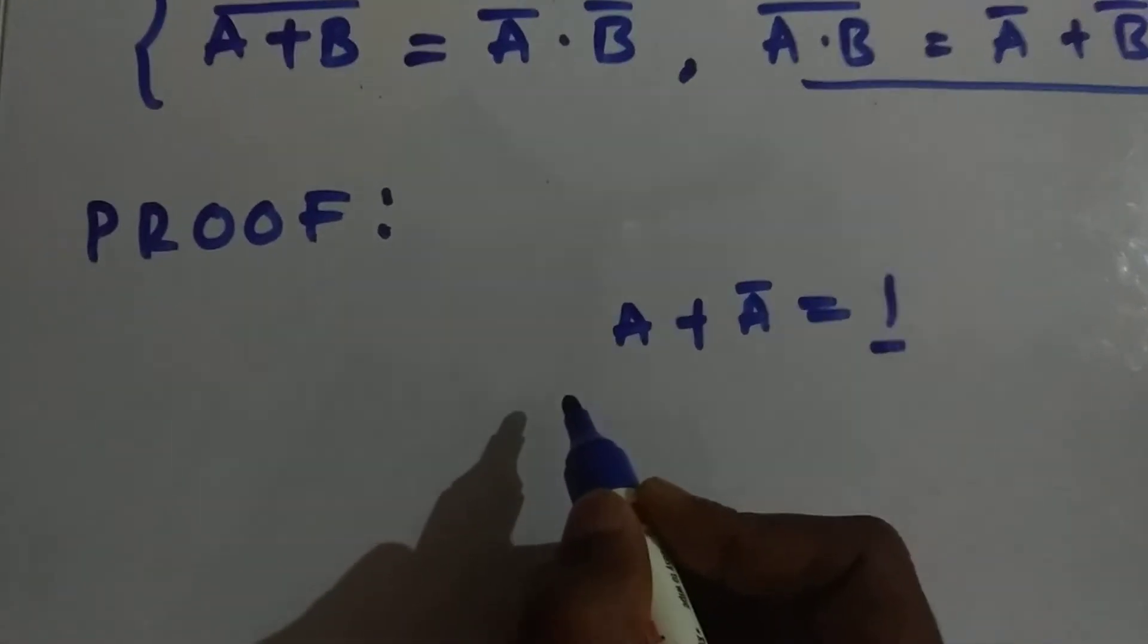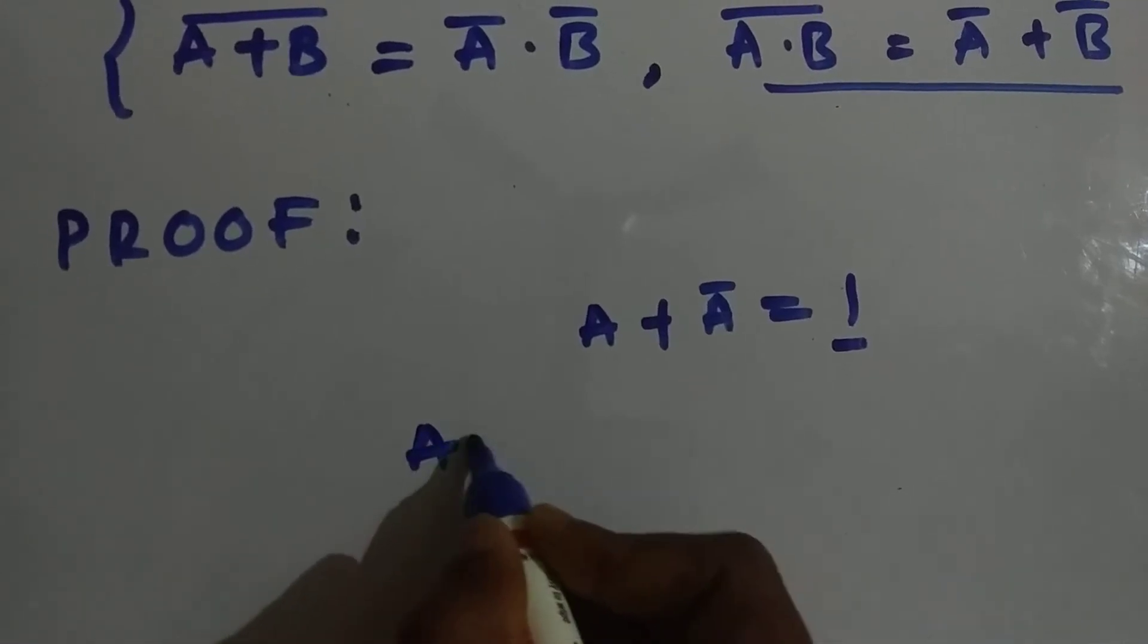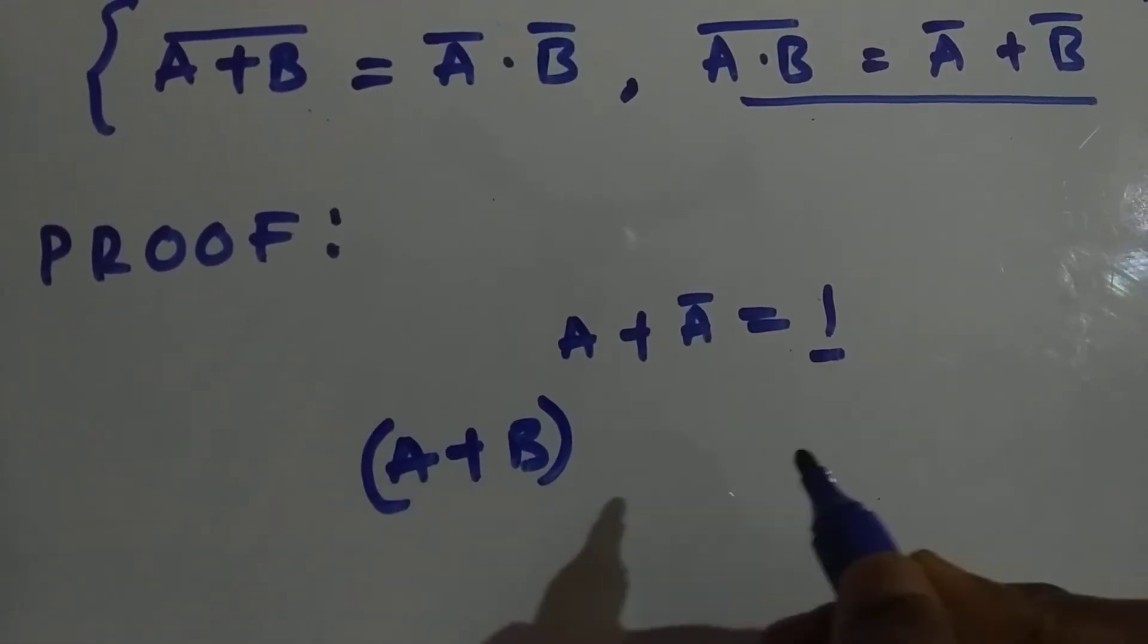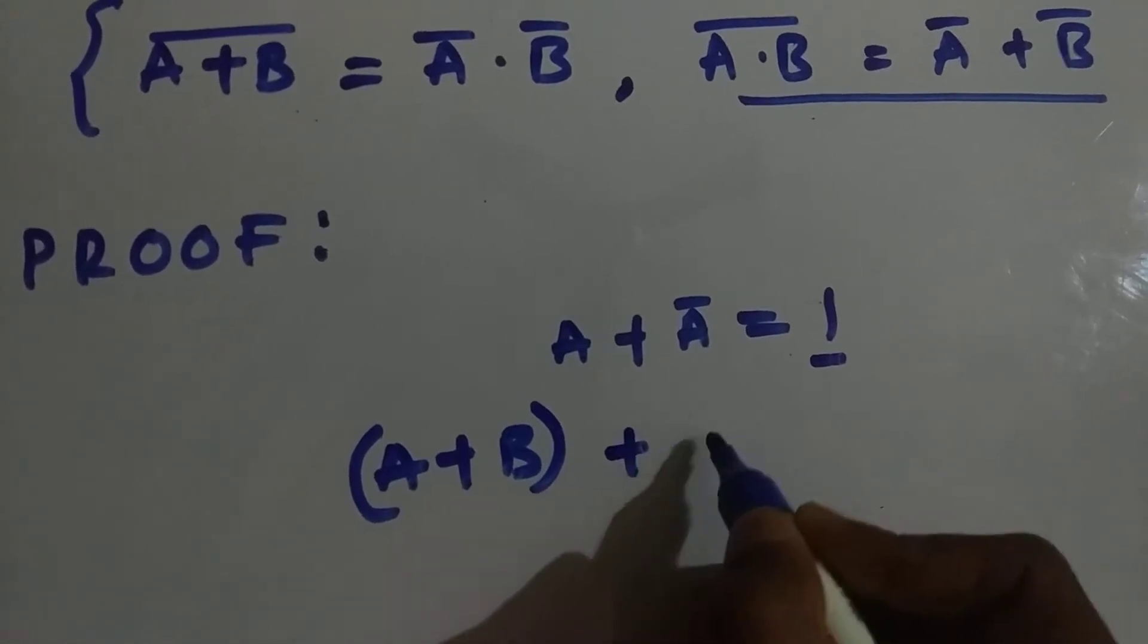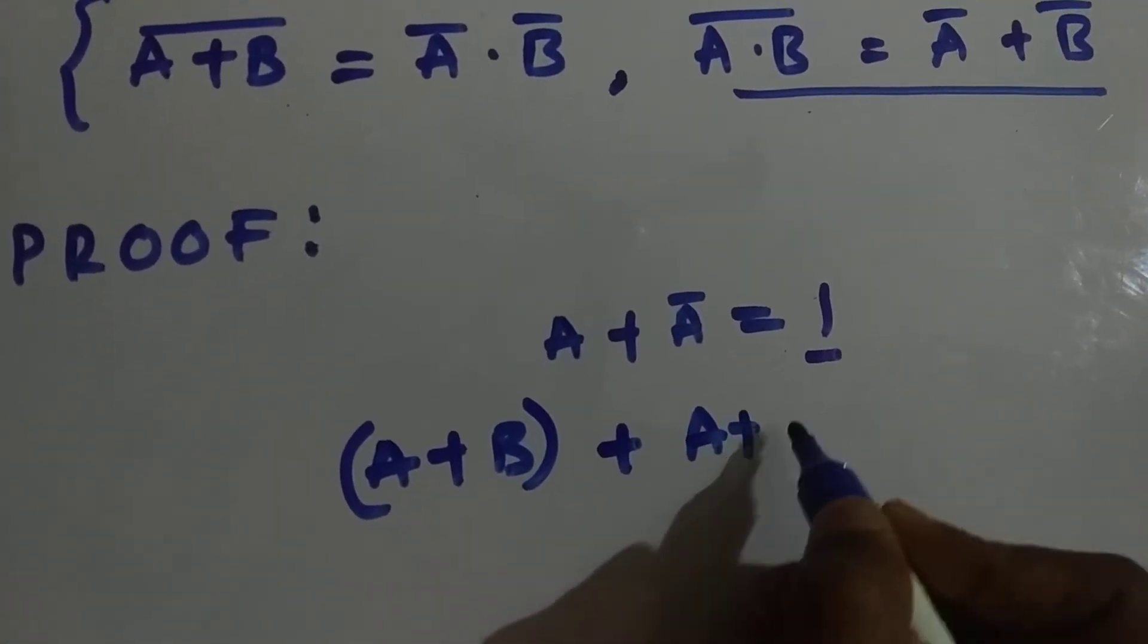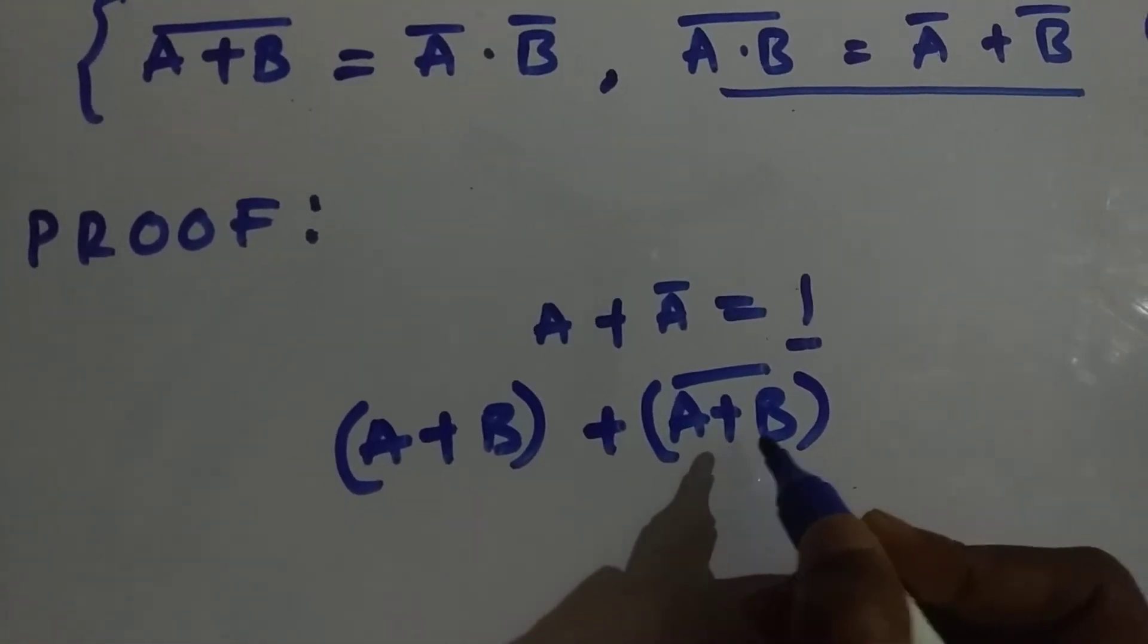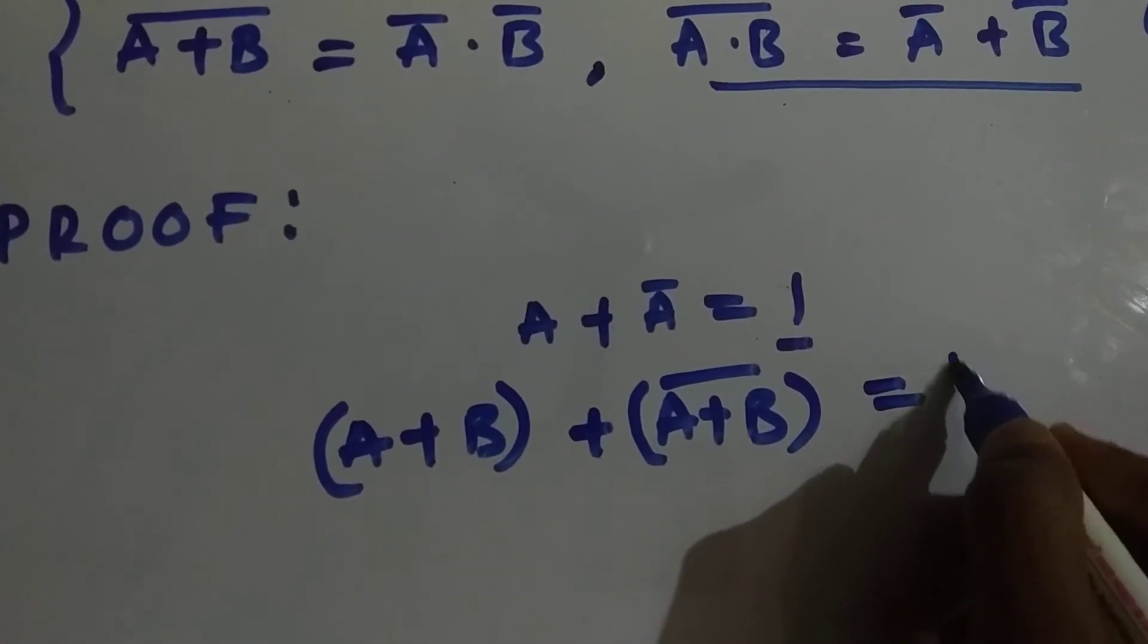Now let us take a variable as A plus B for De Morgan's law proof. A plus B is now a variable, so we need to add its complement. Its complement is A plus B whole bar. If we add these two variables, it should result in 1.